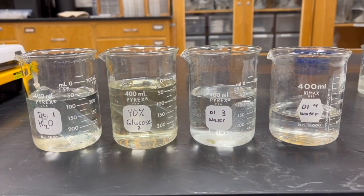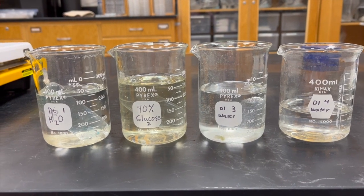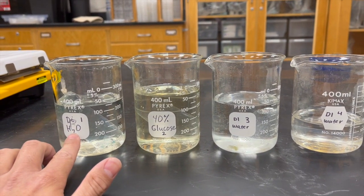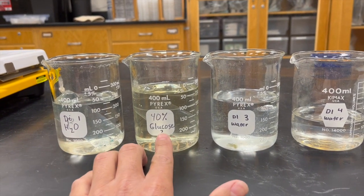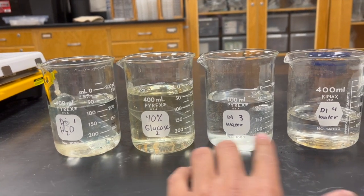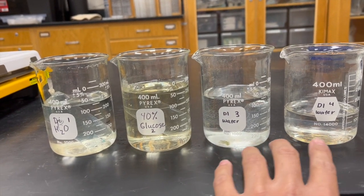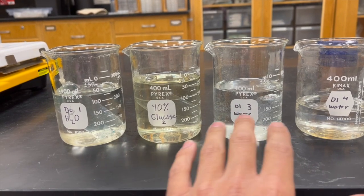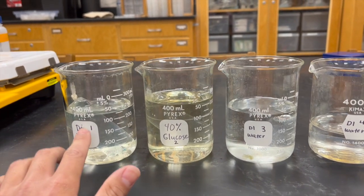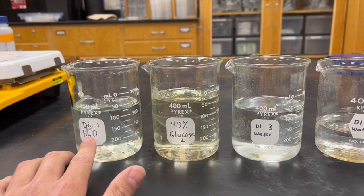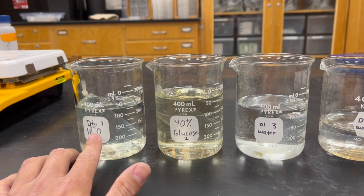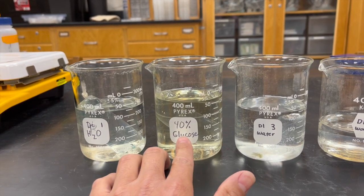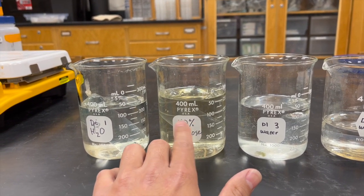Now we have our four different beakers with different solutions. The first beaker has DI water, this one has 40% glucose, and both of these are just DI water. For tube one, the dialysis bag has 40% glucose. For tube two, we have 40% glucose in the dialysis bag as well.